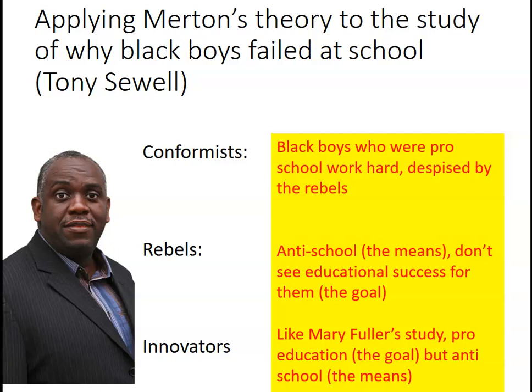Finally, Tony Sewell identified the innovators - and Mary Fuller's study is a good illustration here. These were the black boys or girls who were pro-education: they wanted to be successful but were anti-school. They didn't want to show their peers they were trying hard, and many viewed school as somewhat racist. Like in Mary Fuller's study, the girls didn't want to impress teachers they felt were dismissive, so they studied privately and hard together outside the classroom and succeeded through their own efforts. That's the innovator response applied to education.